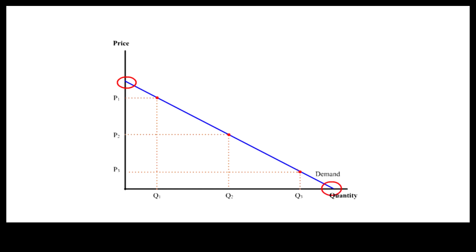When more is bought at lower prices, we say the quantity demanded has increased. When less is bought at higher prices, we say the quantity demanded has decreased.